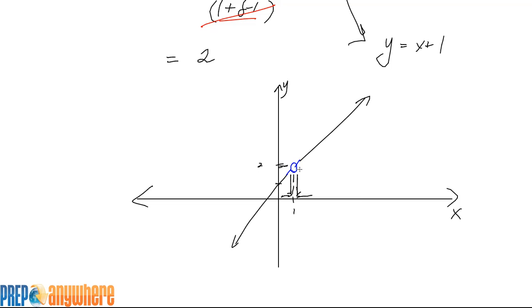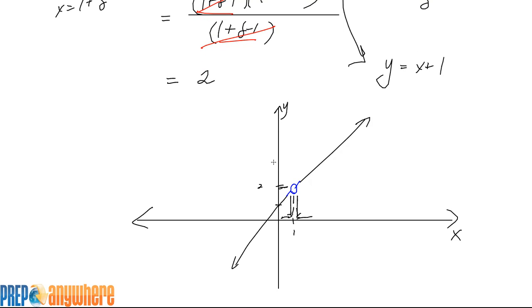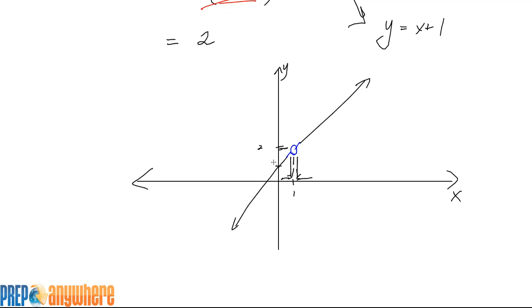Every time you see a case where a common factor crosses out, you have to watch out to see if it is a hole. Now, just because it cancels out, is it always going to be a hole? Let me show you an example.